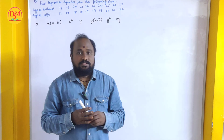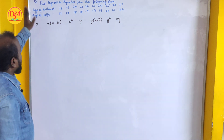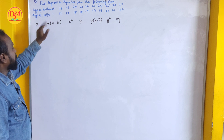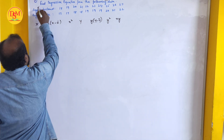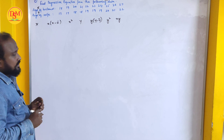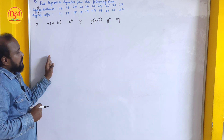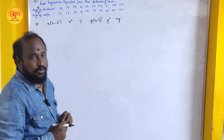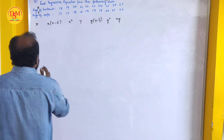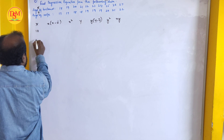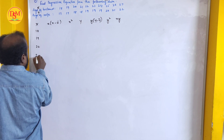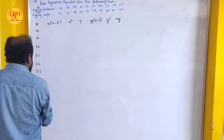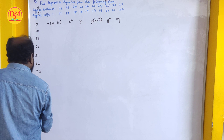Now let's start the sum: find regression equations from the following data. Age of husband and age of wife are given — let us assume husband's age is x and wife's age is y. The x values are: 18, 19, 20, 21, 22, 23, 24, 25, 26, and 27.